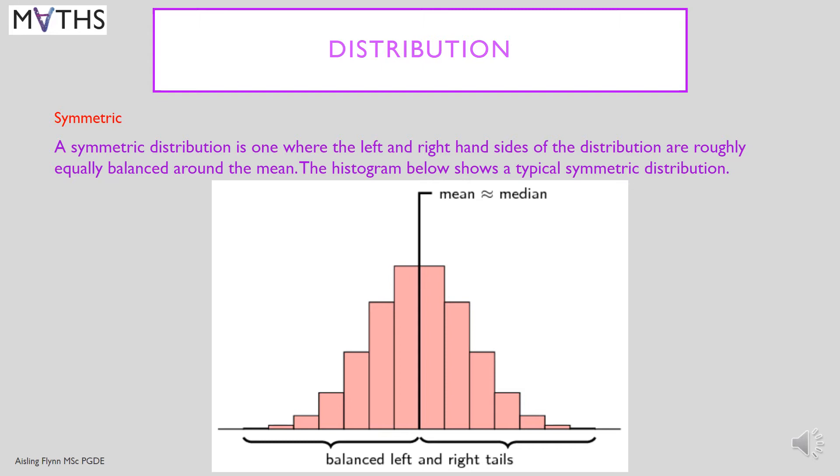On this slide we have a symmetric distribution. Symmetric distributions are when the left and the right hand sides of the distribution are roughly equally balanced around the mean, and the histogram below shows a typical symmetric distribution.